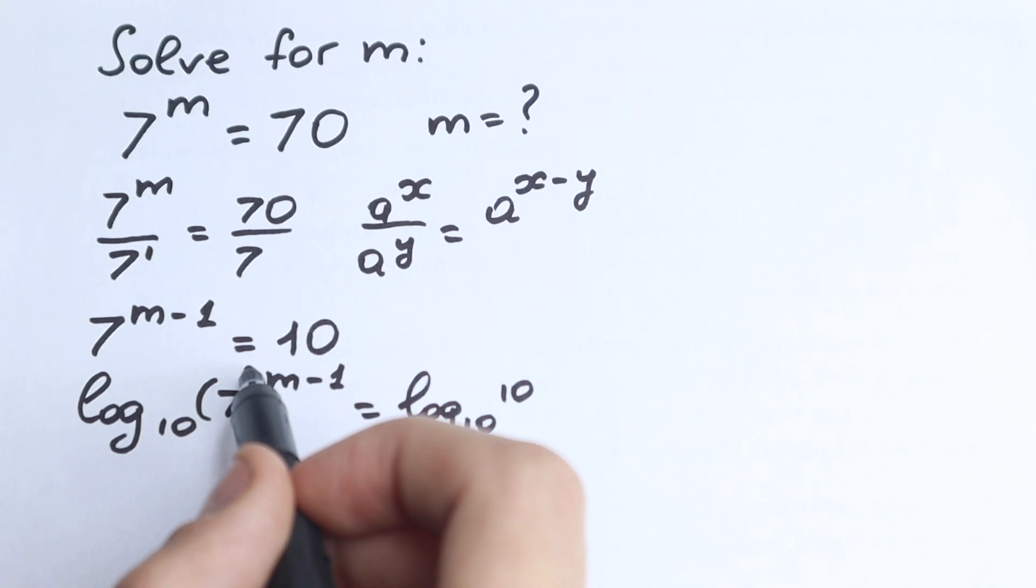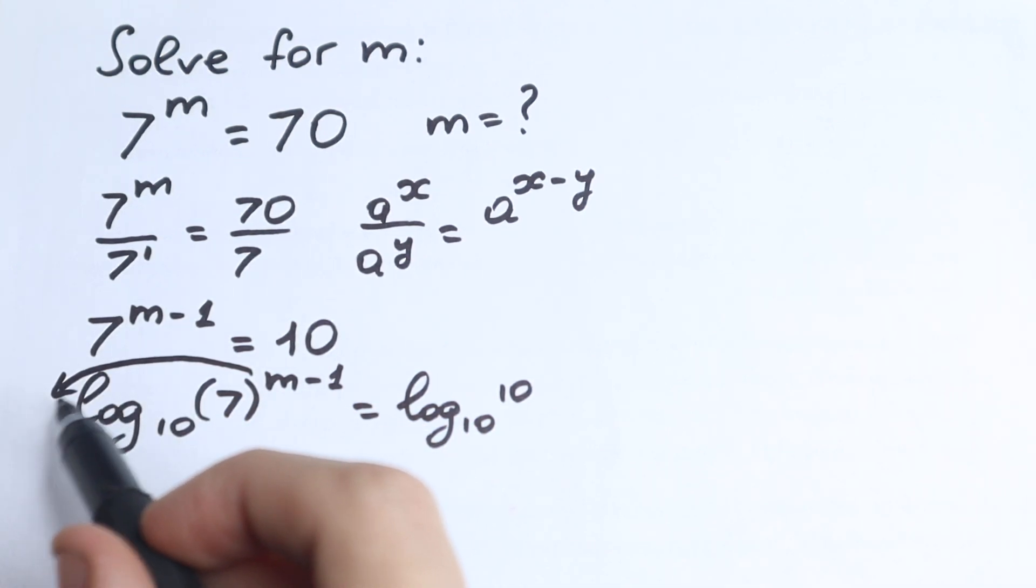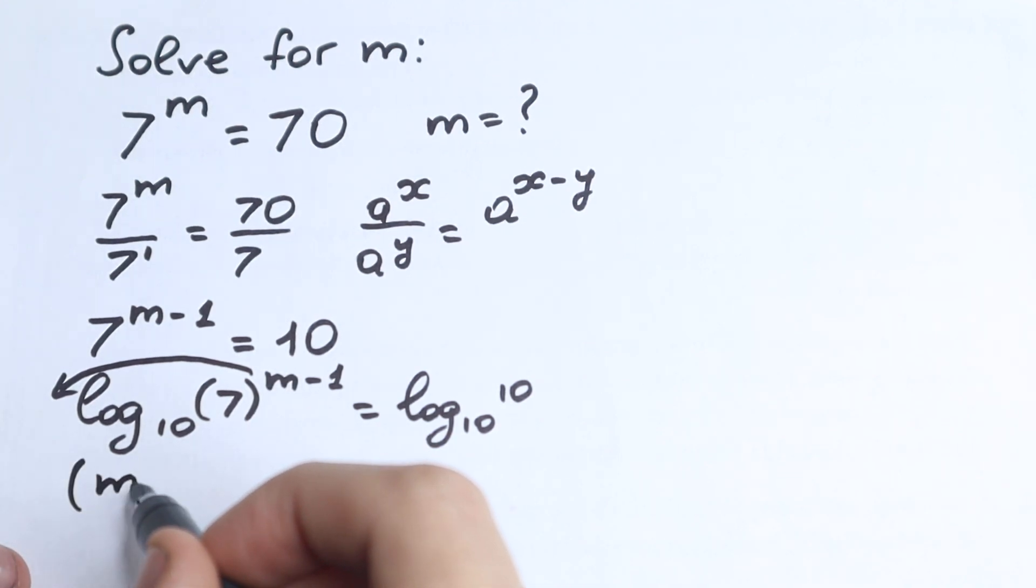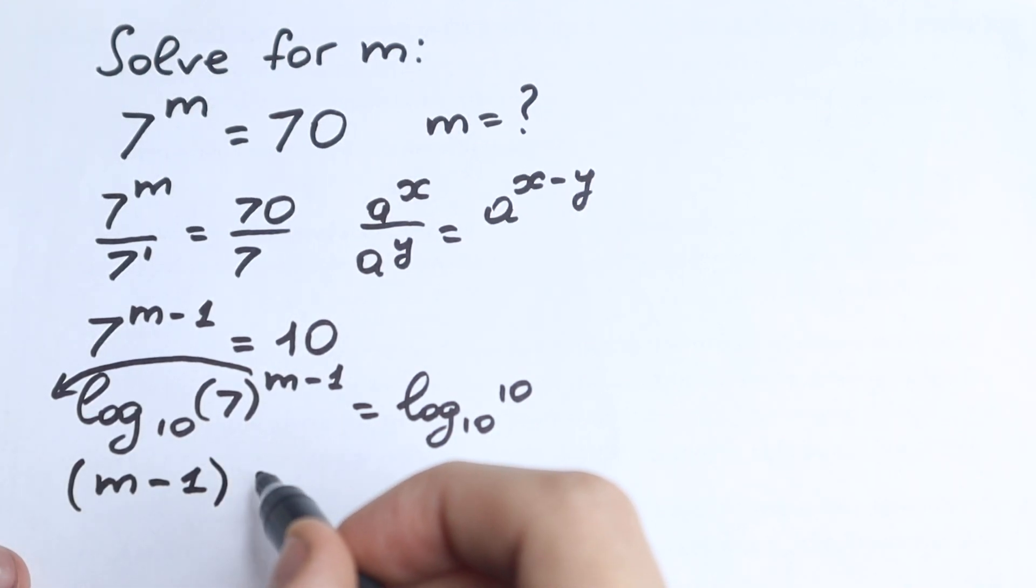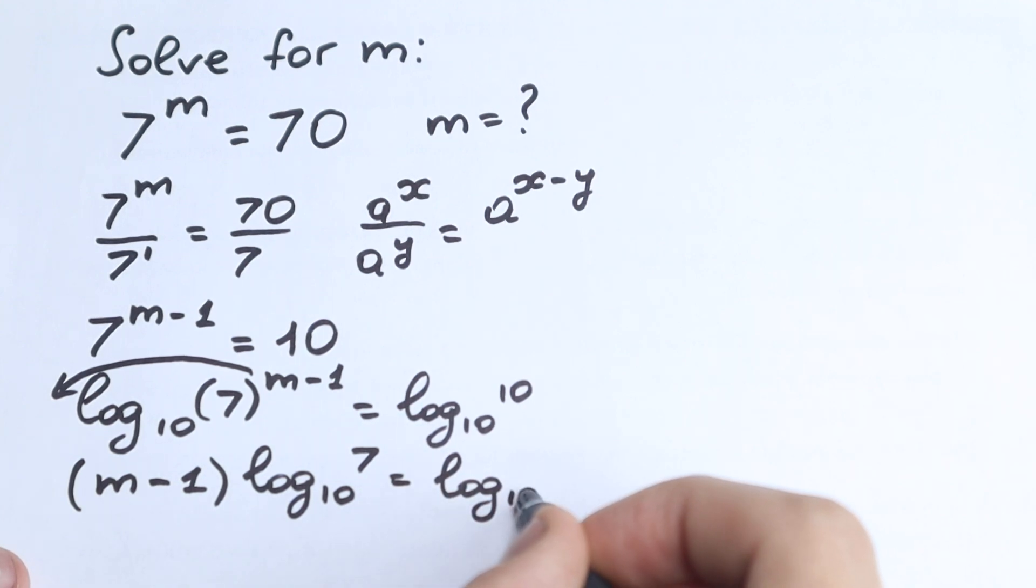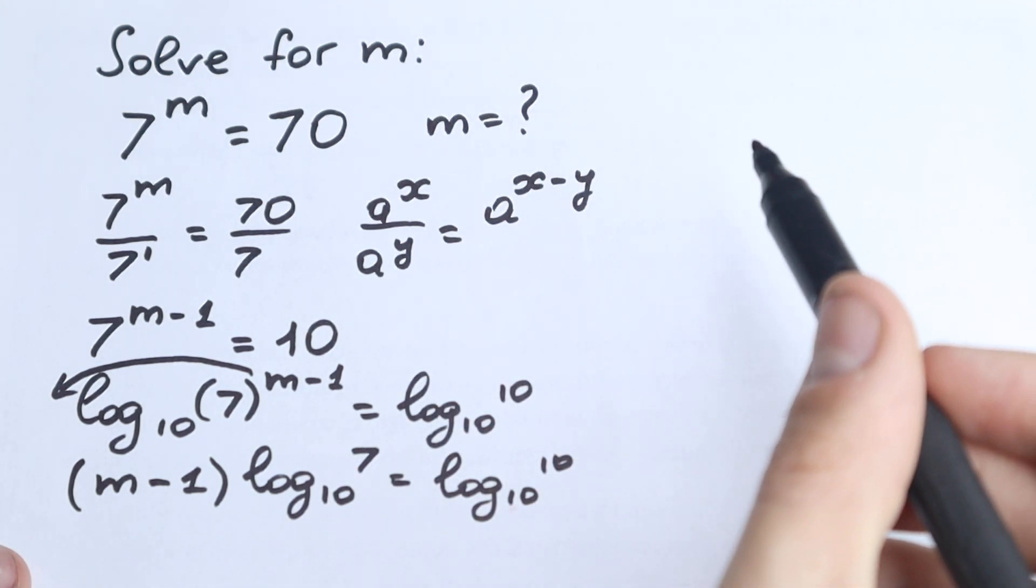And right here, if you know a little bit about log properties, the exponent comes down as a product. So m minus 1 goes right here. We have (m minus 1) times log₁₀(7) equals log₁₀(10). I hope you understand this step. Let's go to the next step.